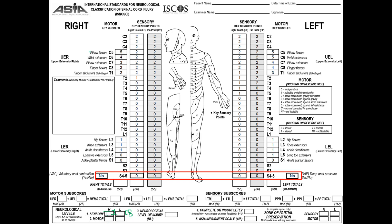The motor level on the right is C6 — I'll write it next to it — and on the left it's C7. Accordingly, the neurological level would be the highest of those, so it's C6.